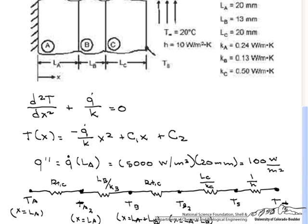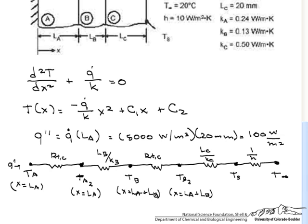So if you can recall from a thermal circuit, this q double prime stays constant throughout. So you can find any temperature as long as you add up the resistances between the two temperatures. So that's what we are going to do here.